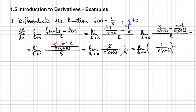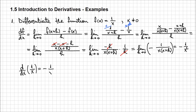Now we can evaluate this limit by plugging in h equals 0 directly into the expression. All we are left with is minus 1 over x squared. So d/dx of (1/x) equals minus 1 over x squared — and this is the derivative of the function 1 over x.